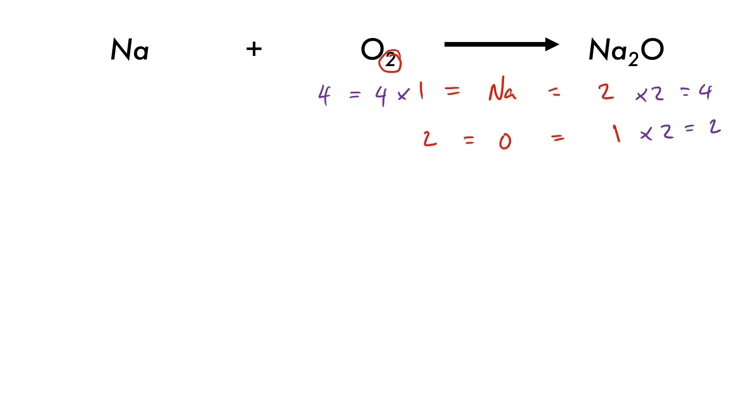So our balanced equation becomes four sodium atoms react with one oxygen to form two sodium oxides. And that's how we would balance this reaction.